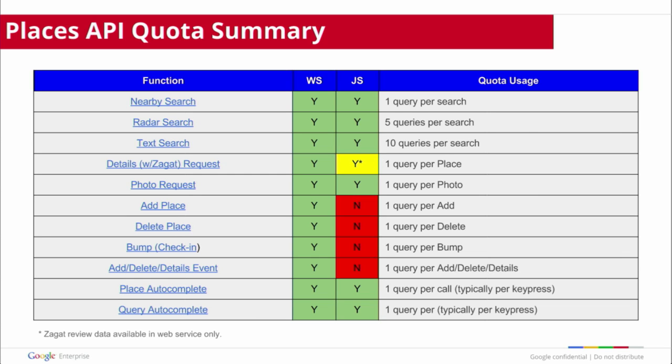The Autocomplete API is something else we get asked about a lot. That also counts as a query every time you call out to the API service. There are also some things shown in red — differences between the web service and the JavaScript API. If you're doing a CRUD action, adding and removing places, which is a capability of the API, that is something you can only do through the web service.